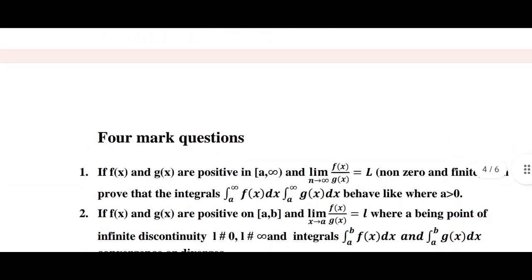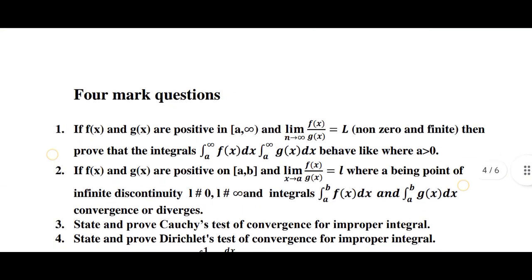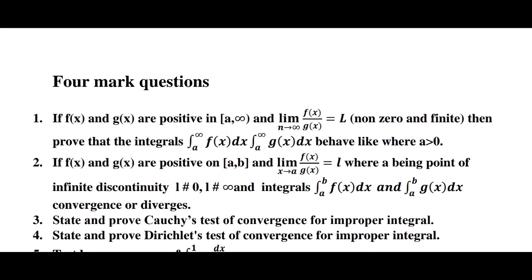Next we will discuss four mark questions from Unit 2. First question: If f of x and g of x are positive in a comma infinity, and limit as n goes to infinity of f of x divided by g of x equals L, non-zero and finite, then prove that the integrals integration from a to infinity f of x dx and integration from a to infinity g of x dx behave alike where a is greater than zero.